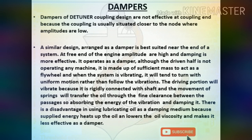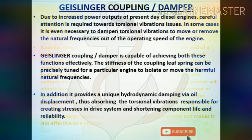At the free end of the engine, amplitudes are high and damping is more effective. The damper's driven half is not operating any machine but has sufficient mass to act as a flywheel. When the system is vibrating it tends to turn with uniform motion rather than follow the vibrations, and movement of springs transfers oil through fine clearances, absorbing and damping vibration energy. A disadvantage of lubricating oil as damping medium is that supplied energy heats the oil, lowering viscosity and making it less effective. Due to increased power outputs of present-day diesel engines, careful attention is required for torsional vibrations. The Geislinger coupling damper is capable of dampening torsional vibrations and removing natural frequencies from the operating speed range.